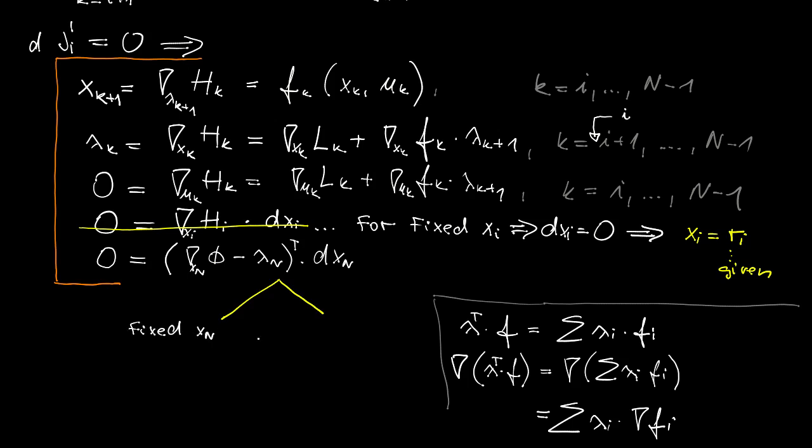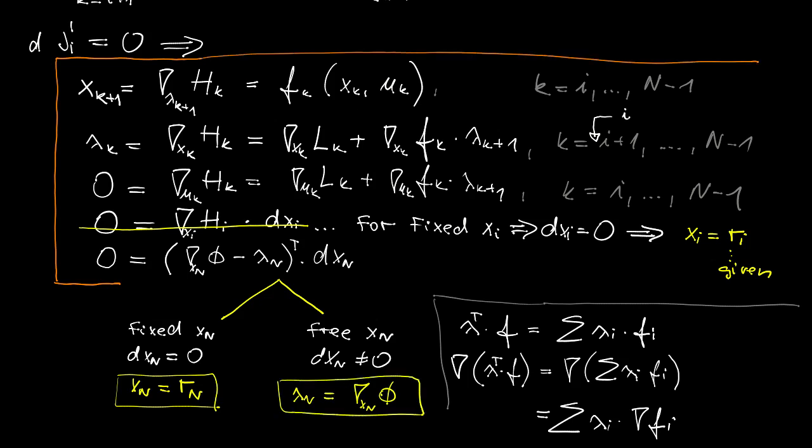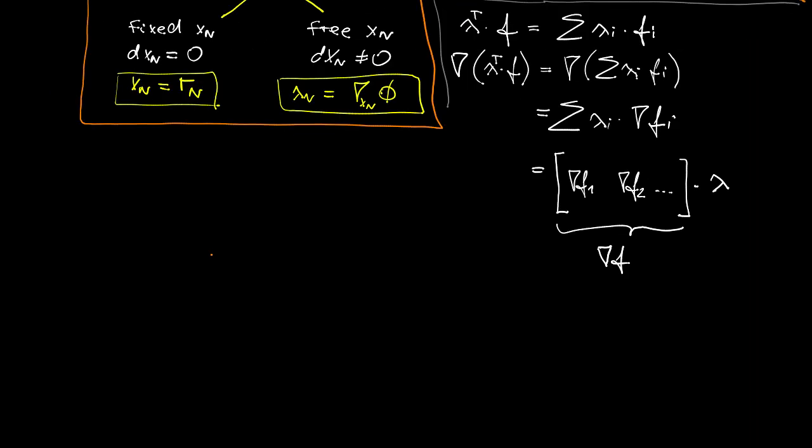And now, the final condition here. If the final state is fixed, that means the differential is equal to 0, then I can again ignore the whole condition. And instead of this, I will introduce the condition that xn is equal to rn. And in the situation that the final state is not specified, that means its differential is not 0, then it must be the second term in the product that is equal to 0. Hence, two possibilities for the condition. And that's essentially it. This is one of the crucial results that we achieved in this lecture.